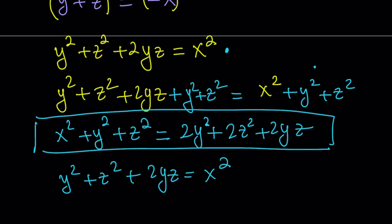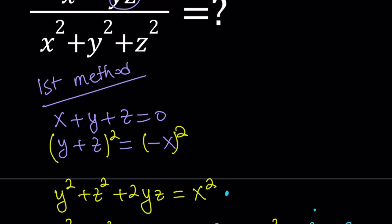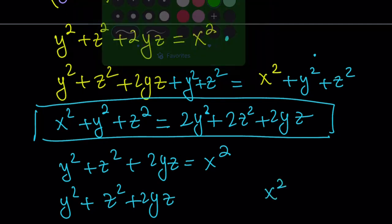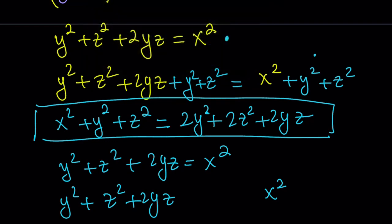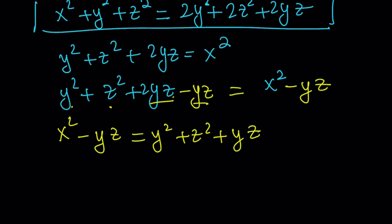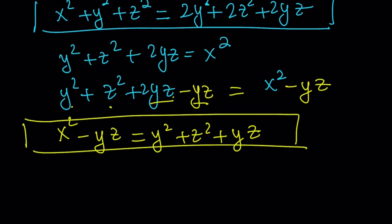Now I want to get what is in the numerator: x squared minus yz. I have x squared on the right-hand side, but I don't have minus yz. So it makes sense to subtract yz from both sides. I subtract yz from both sides, and that gives me x squared minus yz on the left. On the right-hand side, 2yz minus yz simplifies to yz, giving x squared minus yz equals y squared plus z squared plus yz.